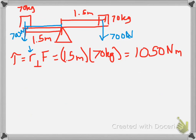So originally I asked the question of how far out would this second object need to be if it's 70 kilograms? So what we need is a torque that matches the other one that is 1050.